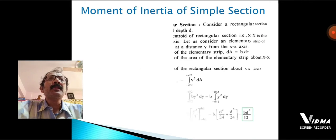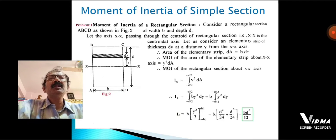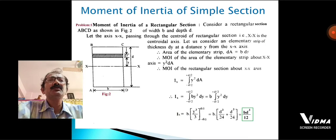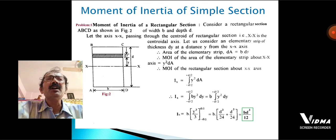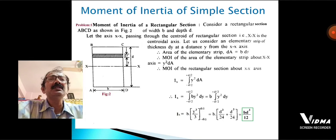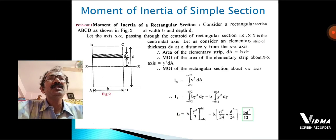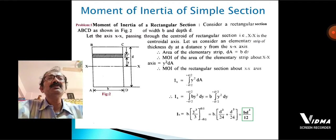Now, moment of inertia of simple sections. Consider the rectangular section — Problem 1: moment of inertia of a rectangular section. In figure 2, there is depth D, width B, and the axis passes through the centroid. Let us consider a small strip of thickness dy at a distance y from the reference axis, that is, the centroidal xx axis. The area of that strip is B·dy. The moment of inertia of the elemental strip about the xx axis is y²·dA.